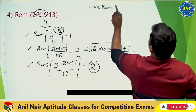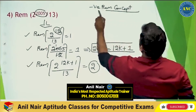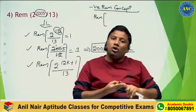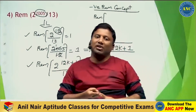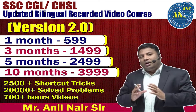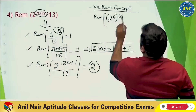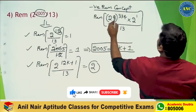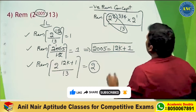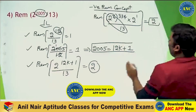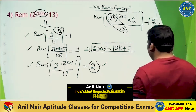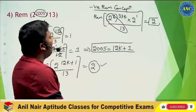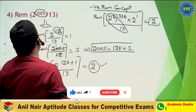Using the negative remainder concept gives the same answer. Find which power of 2 when divided by 13 gives +1 or -1: 2^1=2, 2^2=4, 2^3=8, 2^4=16→3, 2^5=32, 2^6=64→remainder is 64-63=1, or using negative: -1 raised to an even power is 1, then times 2^1 gives 2. Both methods give the same answer. Fermat's theorem is used when the denominator is a prime number.